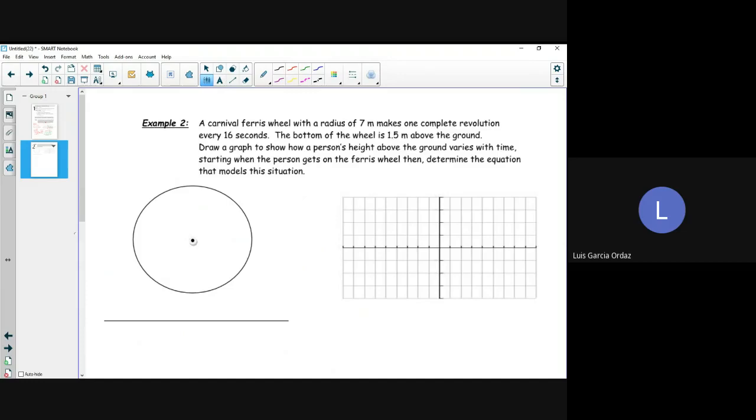So a carnival Ferris wheel with a radius of 7 meters makes one complete revolution every 16 seconds. The bottom of the wheel is 1.5 meters above the ground. We want to draw a graph to show how a person's height above the ground varies with time, starting when the person gets on the Ferris wheel. So we have to label some things first. What's the two easiest things that we can label? So the radius is going to be 7.